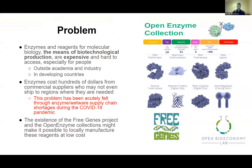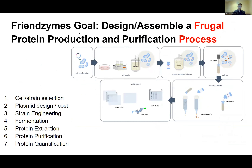So what's the problem that we really want to solve in Frenzymes? In order to democratize biotechnology, we want to design those open enzymes in a way that they can be frugally produced and purified. We want to design the entire process in a frugal way — this includes cell and strain selection, plasmid design and cost, strain engineering, fermentation, extraction and purification, and quantification of the protein.